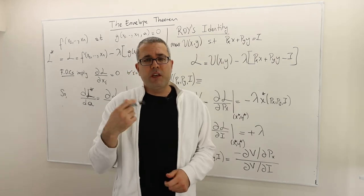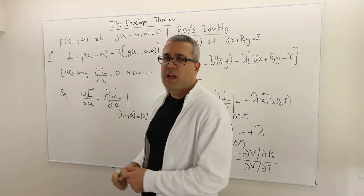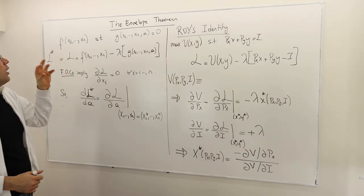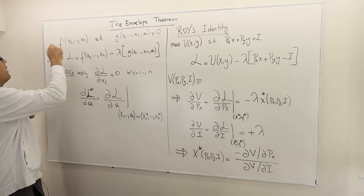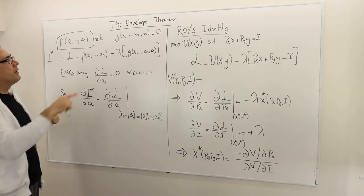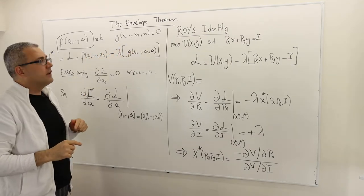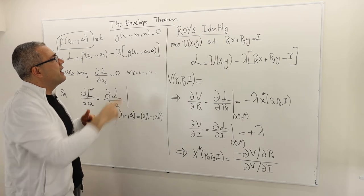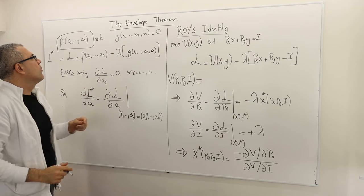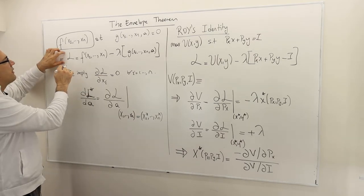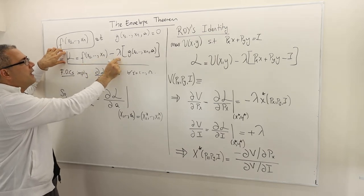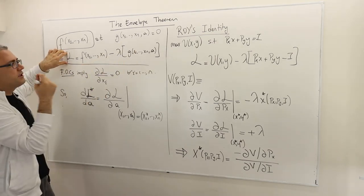Hi guys, so we continue our discussion on the envelope theorem. Now we have the constrained optimization problem: maximize the objective function which has n variables, subject to the constraint g of x1 up to xn, and let's suppose some parameter a equals 0 for simplicity. So how do we write the Lagrangian function? The Lagrangian function is your objective function minus lambda times g.